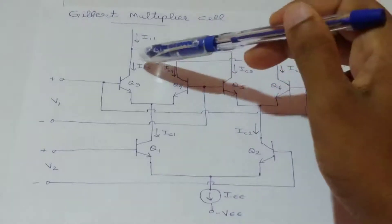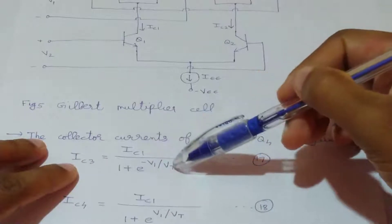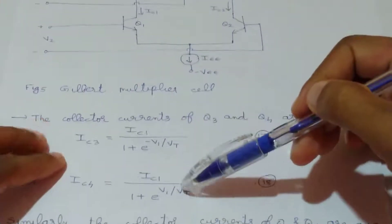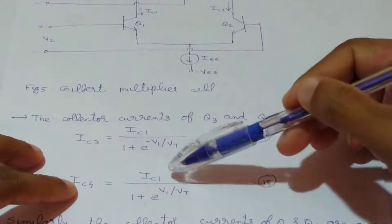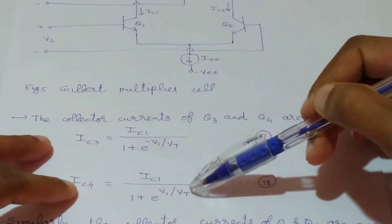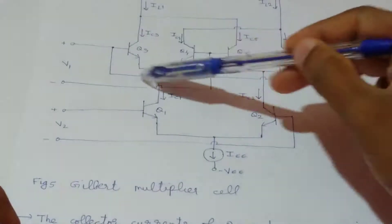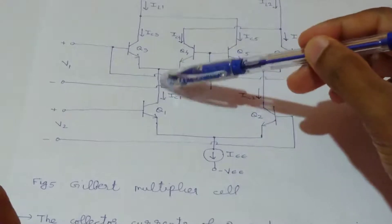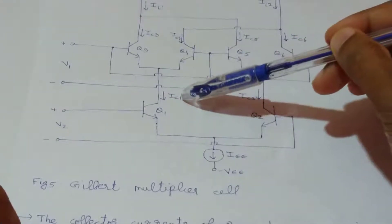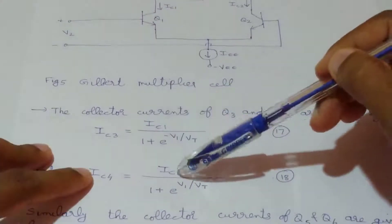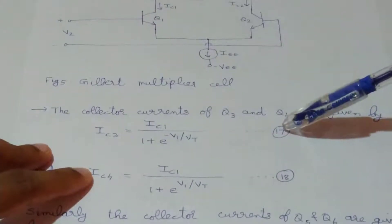Hence, IC3 equals IC1 divided by (1 + e raised to minus V1 over Vt), and IC4 equals IC1 divided by (1 + e raised to V1 over Vt), since in place of the biasing current IEE we have IC1 in the numerator. These are equations 17 and 18.